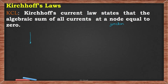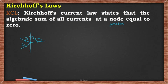Here is a junction connected with n number of branches. Say the currents are I1, I2, I3, I4, and I5. The algebraic sum of these currents — I1 + I2 + I3 + I4 + I5 — equals zero. To make this algebraic, we need to assign signs to each current.